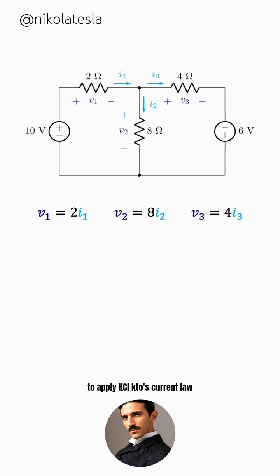The next step is to apply KCL, Kirchhoff's current law. We see that the current I1 splits into two chunks, I2 and I3. So, I1 must be equal to the sum of I2 and I3 by KCL.